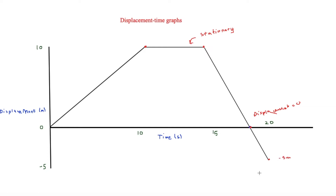So if we were to work out the average velocity — which is resultant displacement over total time — the resultant displacement is minus 5 and the total time is 20.